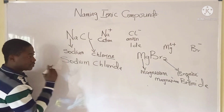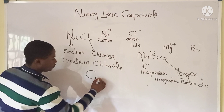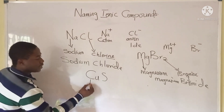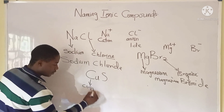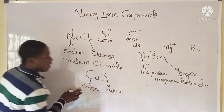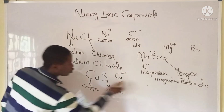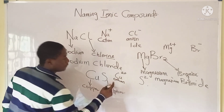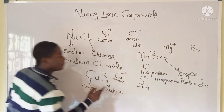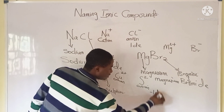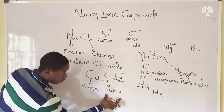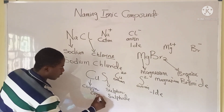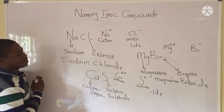Now let's take another example to understand this concept better, using CuS. What is the name of this compound? This compound comprises just two elements: copper and sulfur. Copper is positively charged and sulfur is negatively charged. The positively charged atom is called the cation and the negatively charged atom is called the anion. For the anion, the name is changed to end with '-ide,' so sulfur changes to sulfide, and the name of this compound becomes copper sulfide.